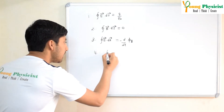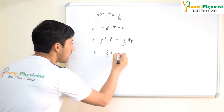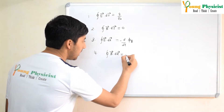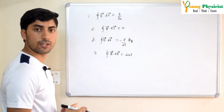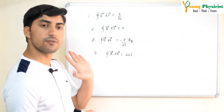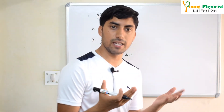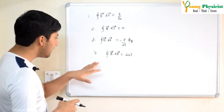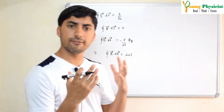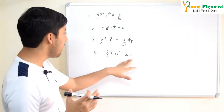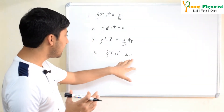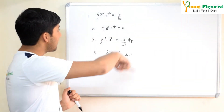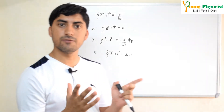The fourth equation is Ampere's Circuital Law. It states that the line integral of the magnetic field over a closed loop is equal to μ₀ times the current I, where μ₀ is the permeability of free space, also called the magnetic constant. This equation allows you to calculate the magnetic field produced by a current-carrying circuit. These four equations, before Maxwell's modification, are not yet called Maxwell's equations.